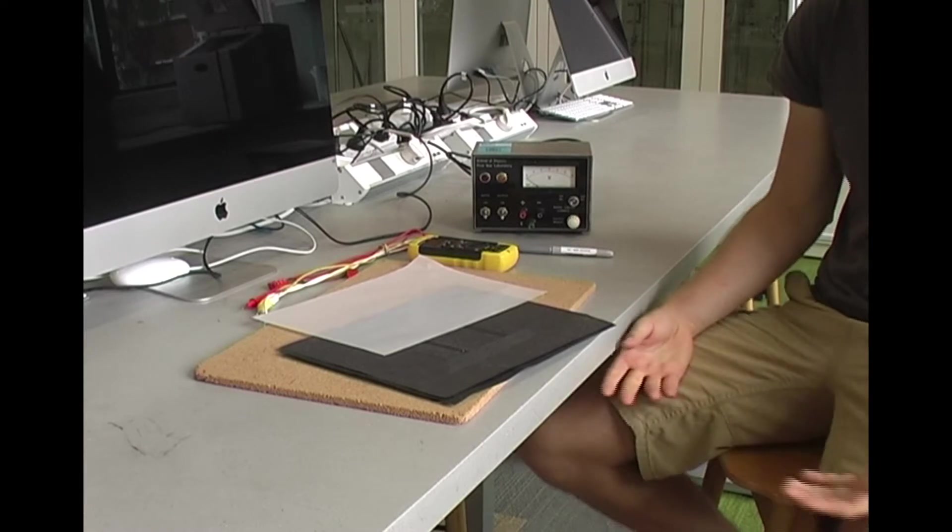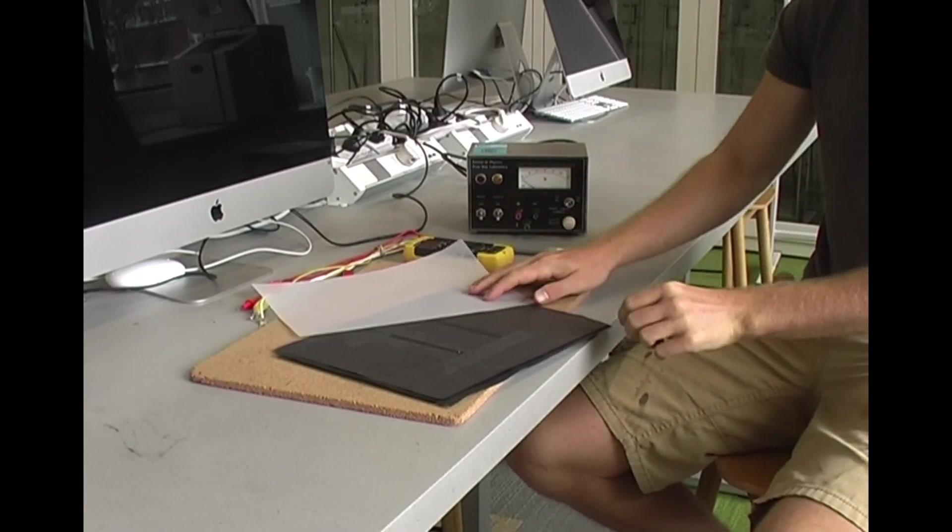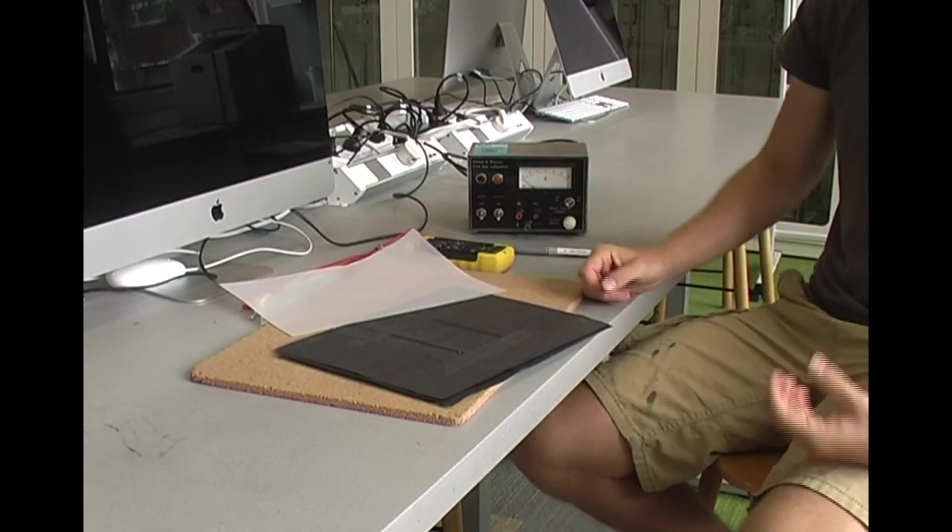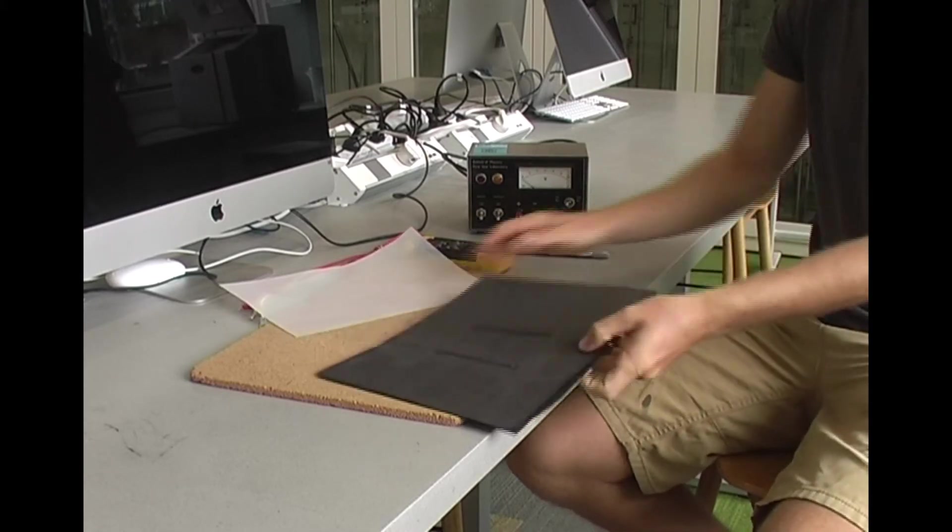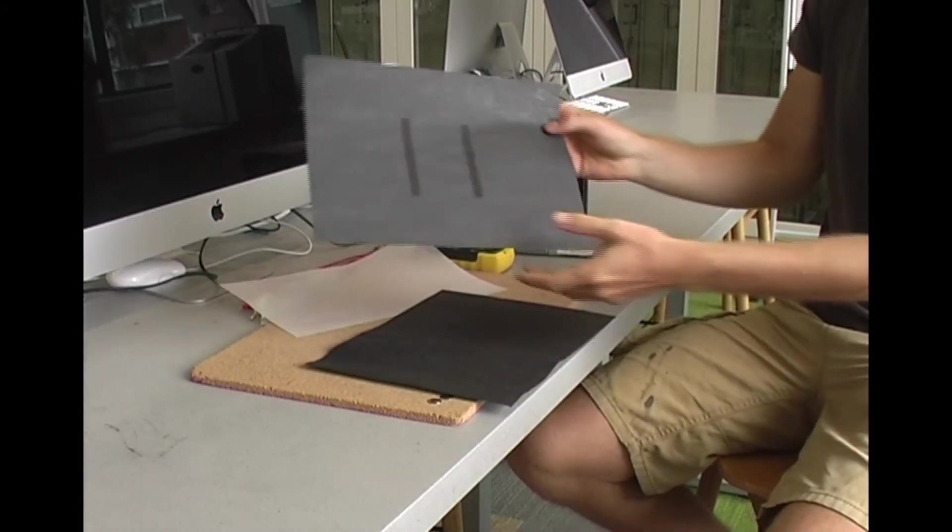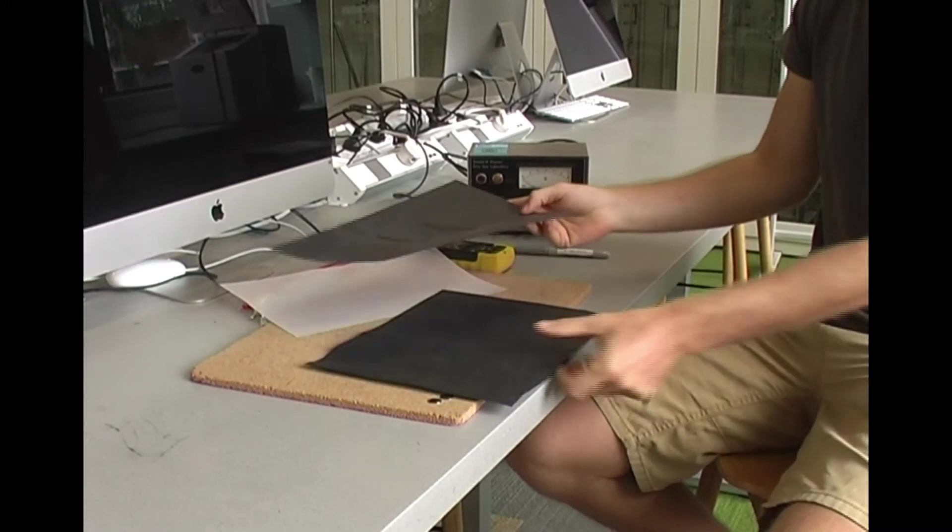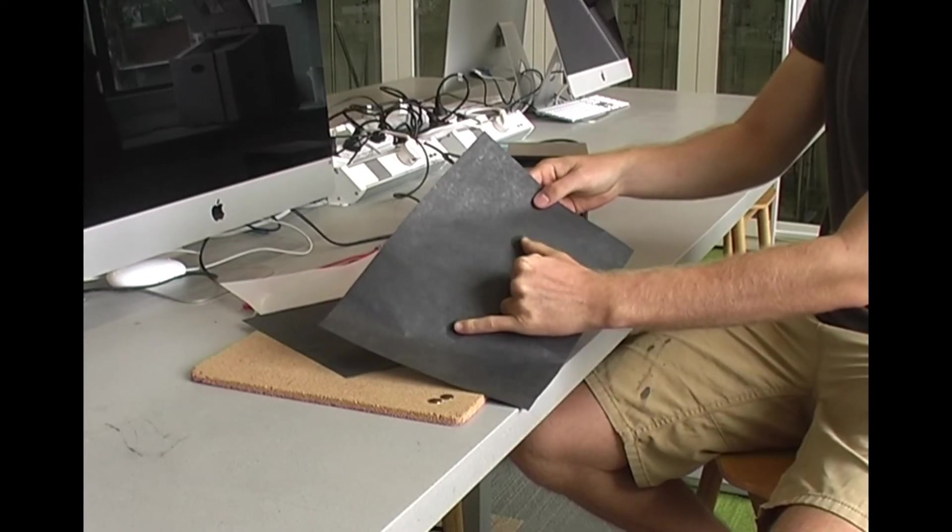Welcome to the electrostatics lab. This is everything you need here for the experiment where you'll be looking at tracing out equipotentials and electric field lines. So you've got your conductive paper here. This one is for your plate capacitor. You see it's got two lines down here. And for the second part of the experiment you've got the two point sources which are here and here.